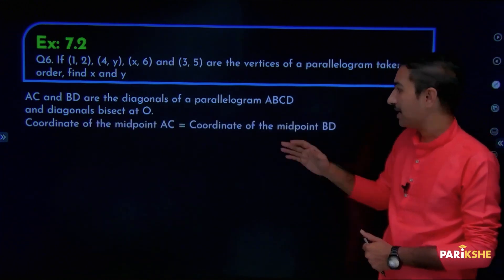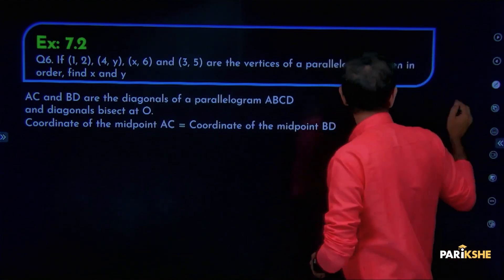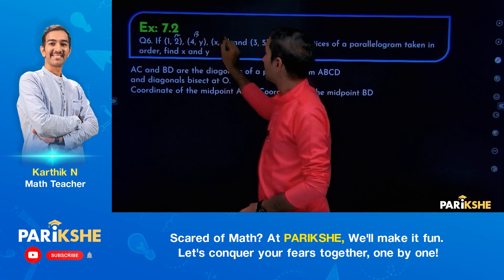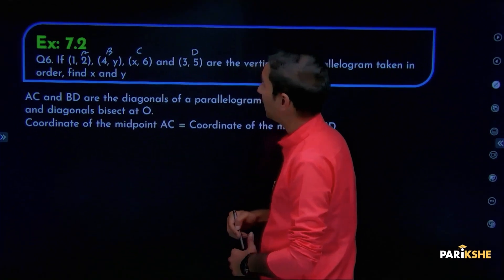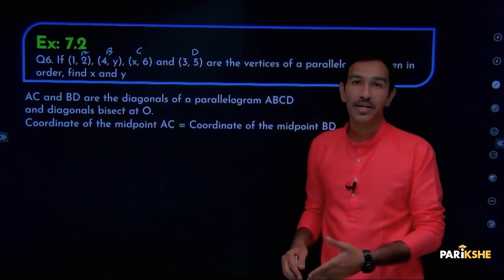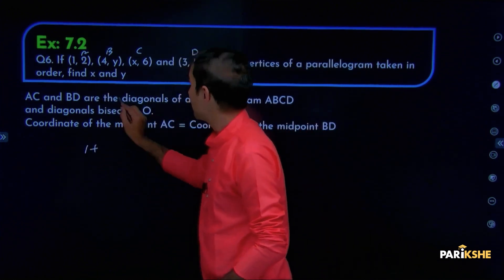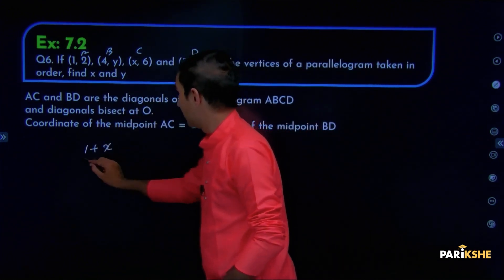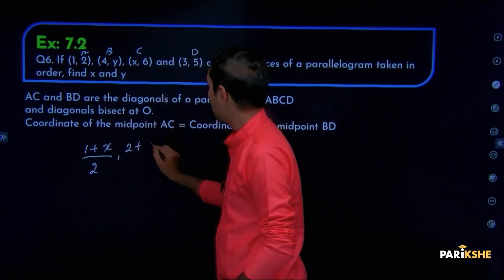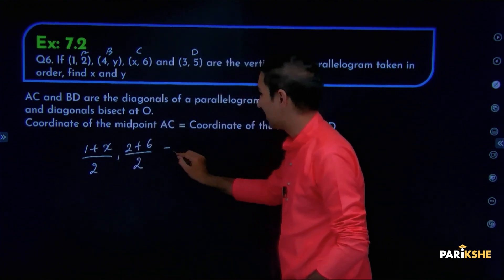Coordinate of midpoint of AC is equal to coordinate of midpoint of BD. AC vandhu diagonal — midpoint formula: x1 plus x2 divided by 2, y1 plus y2 divided by 2. So x1 andreanidhe 1, plus x2 andreanidhe x, divided by 2; y1 plus y2 divided by 2. Idhu midpoint of AC agathe.